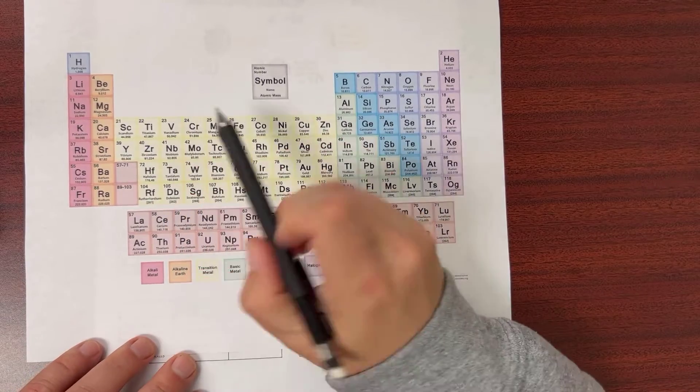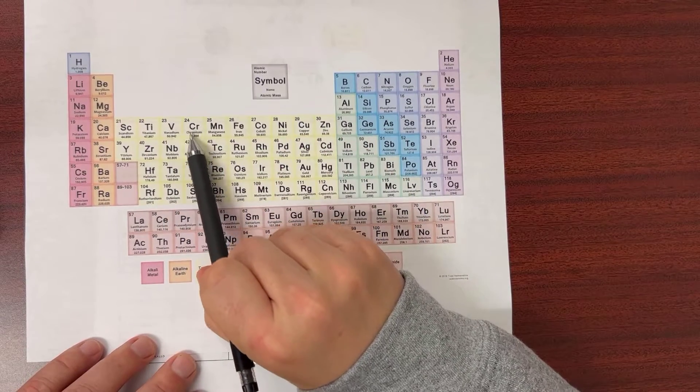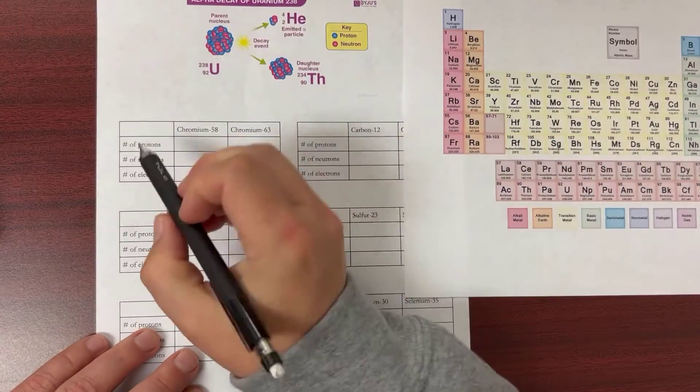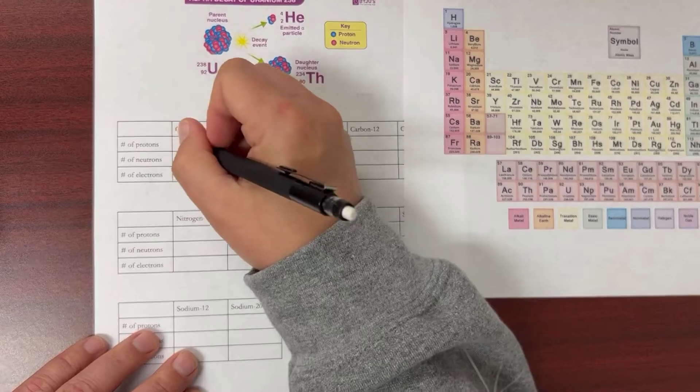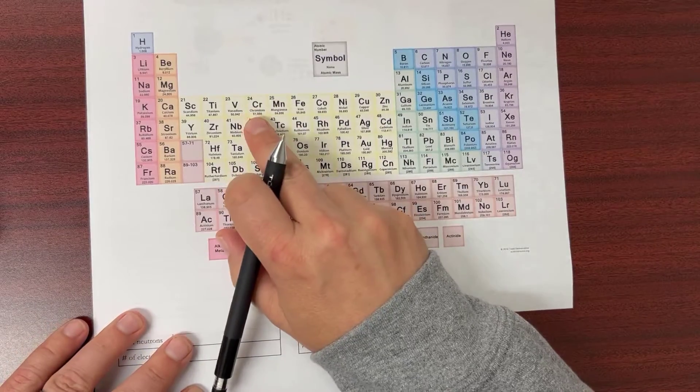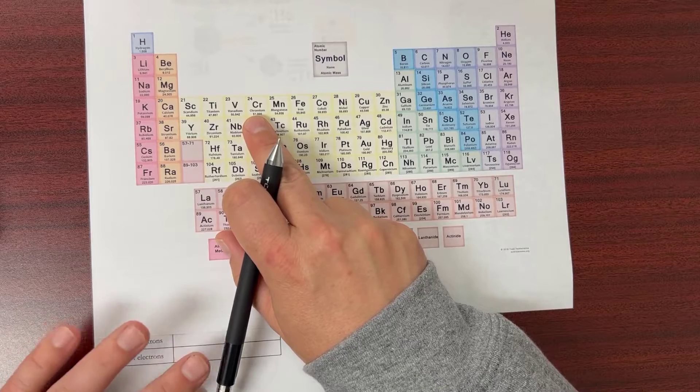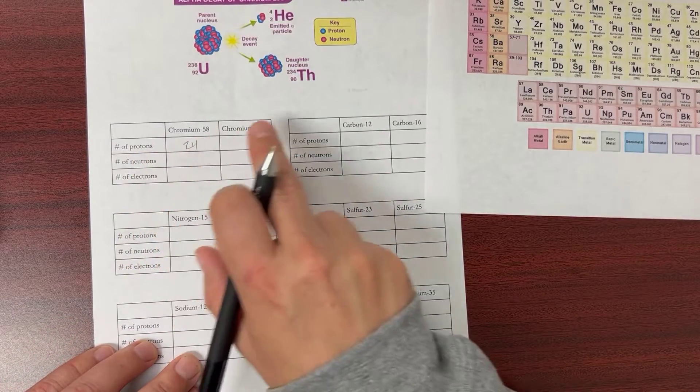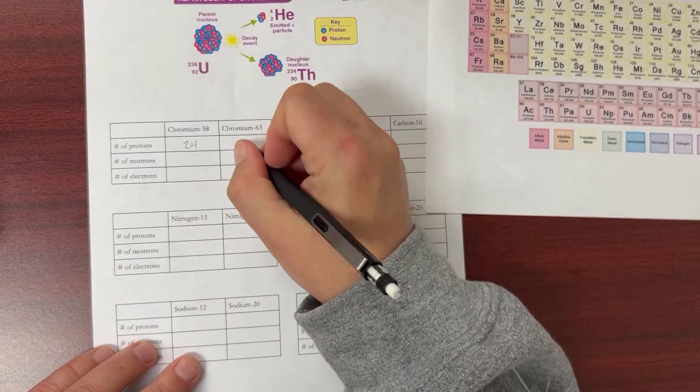This is how we read it: 24 is the atomic number of chromium. It's also the number of protons, so the number of protons for chromium is 24. Now chromium is always 24, no matter what, as far as protons go. So chromium-58, chromium-63—they always have 24 protons.